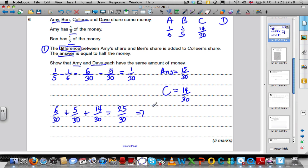Therefore, Dave must have the remaining 5 out of 30. So we can therefore say that Amy's share equals 5 out of 30. Dave's share equals 5 out of 30. So they have the same amount as required.